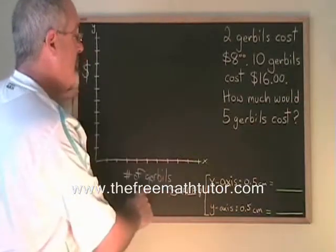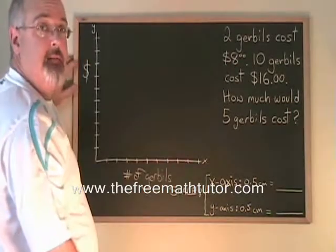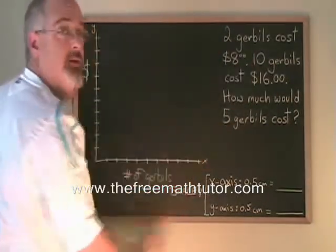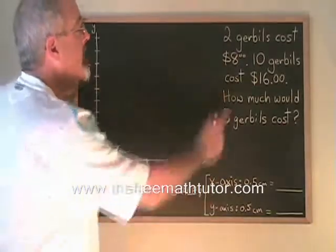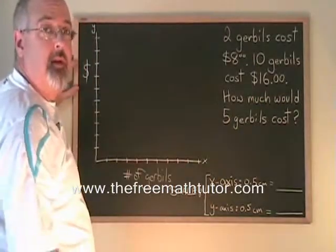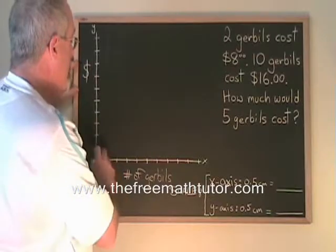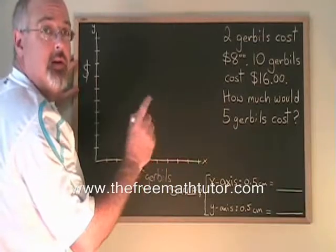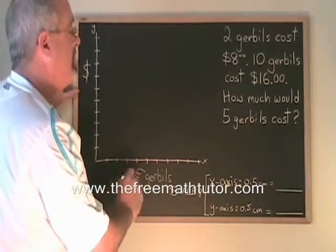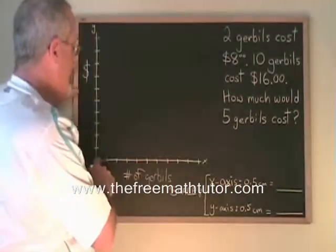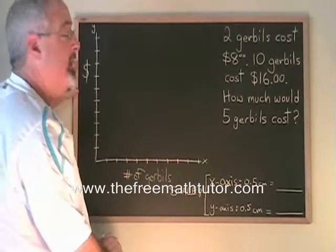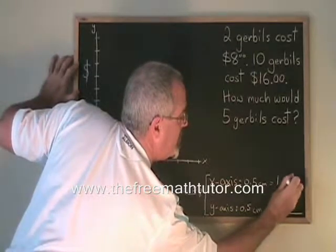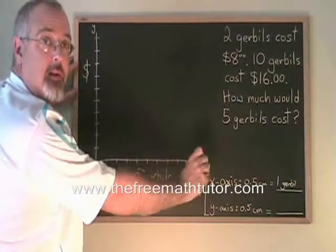On my x-axis, the number of gerbils have to be represented. I look at the numbers that I have. I have 2 gerbils, 10 gerbils, 5 gerbils. And I look for the largest of those numbers. 10 gerbils is the largest number that I have to put on the graph. When I look at my graph paper, I see that I have 10 squares going across. So this is an easy axis to scale because I can make 0.5 centimeters, which is the width of 1 square on the graph paper, equal to 1 gerbil. And then I put the numbers along the axis.